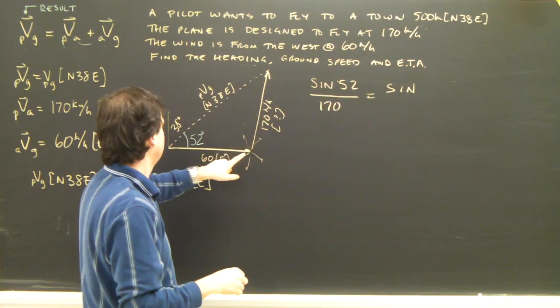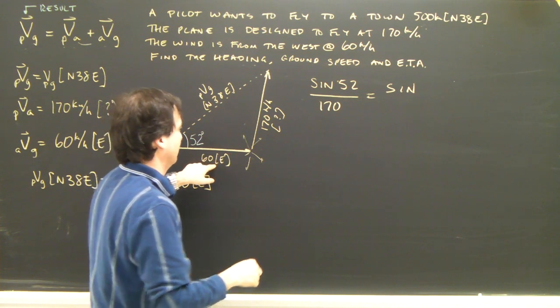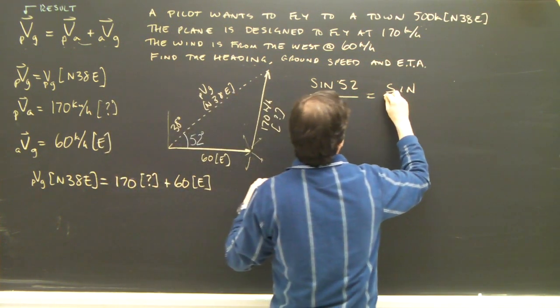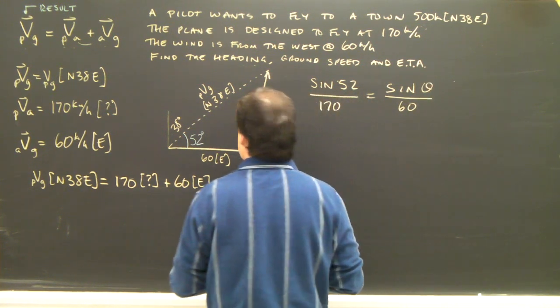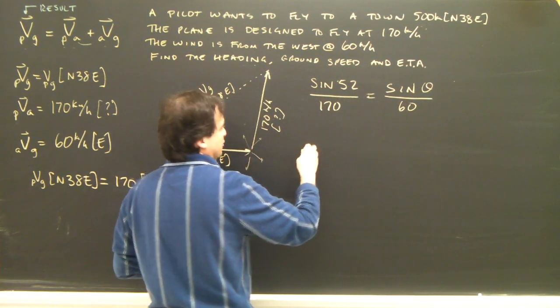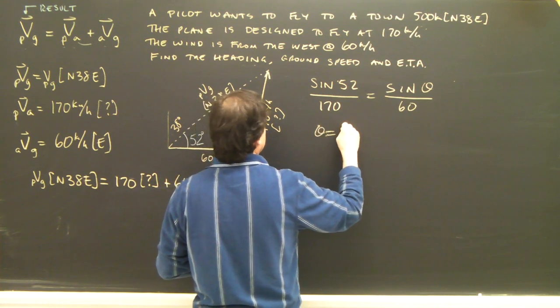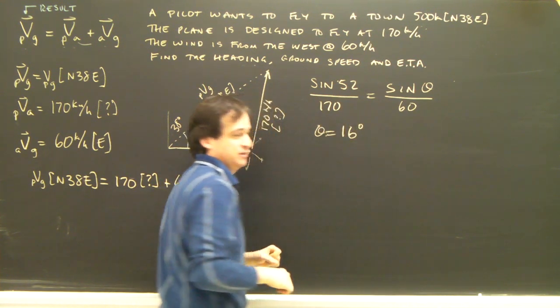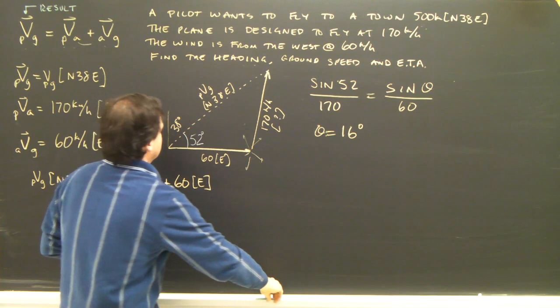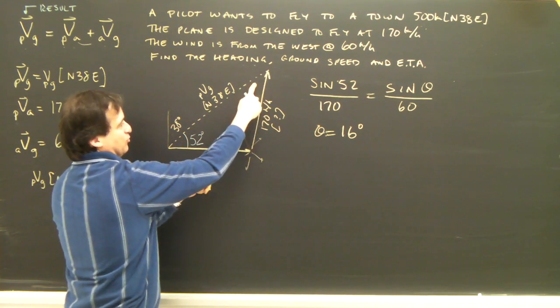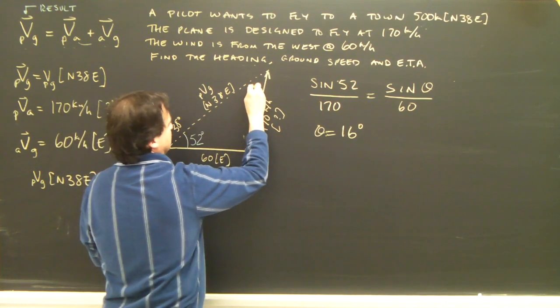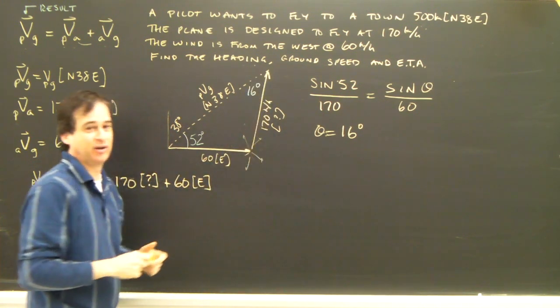Sine 52 over 170. So this angle over this side is going to equal sine of some other angle over some other side. Well I've got this side here, 60. So I'm looking for that angle. So I rearrange that, I solve for it, and I get that angle is 16 degrees. Sine of this over this side is equal to sine of this over that side. So this ends up being 16 degrees. That's great.